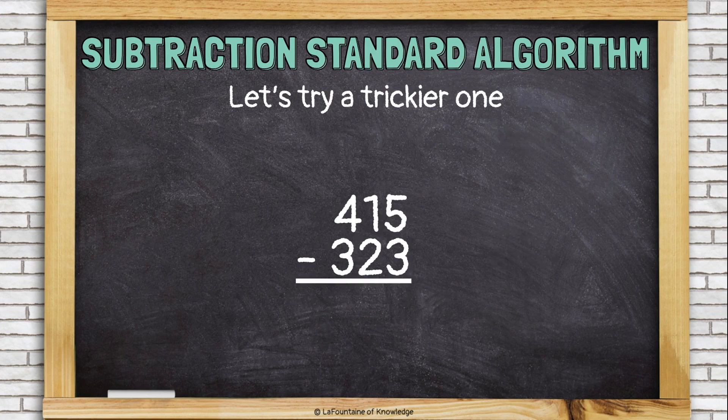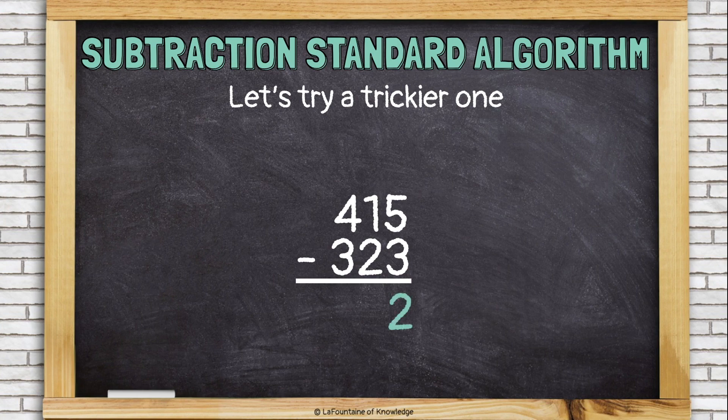Let's try a trickier one. I already have my numbers lined up to subtract 415 minus 323. So, let's subtract the ones. Five minus three is two.